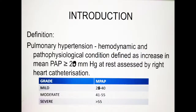Welcome to my new video on echocardiographic evaluation of pulmonary arterial hypertension. The definition of pulmonary arterial hypertension is a mean pulmonary arterial pressure of more than 20 mmHg at rest, assessed by right heart catheterization. The earlier definition was mean pulmonary arterial pressure more than 25 mmHg; it has now been reduced to 20 mmHg.